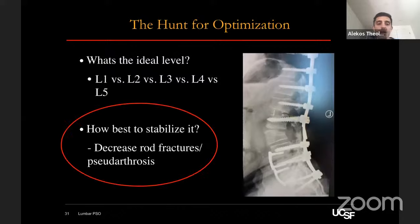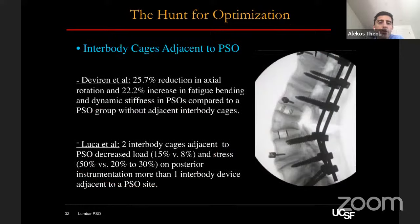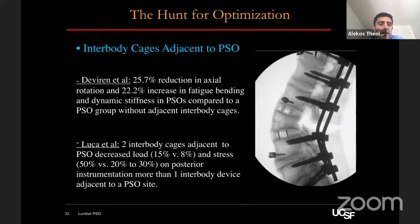How best to stabilize these has gone through many iterations with a lot of nice biomechanical work. One of the first techniques to minimize rod strain and rod breakage with two-rod constructs is to place cages adjacent to the PSO, both cranially and caudally. Devrin here at UCSF found a 26% reduction in axial rotation and 22% increase in fatigue bending dynamic stiffness in PSOs with adjacent interbody cages compared to those without. Luca then looked at the effect of two interbody cages — one cranial, one caudal — compared to one cage adjacent to the PSO site and found that sandwiching the PSO provided much less load and strain on the rods.